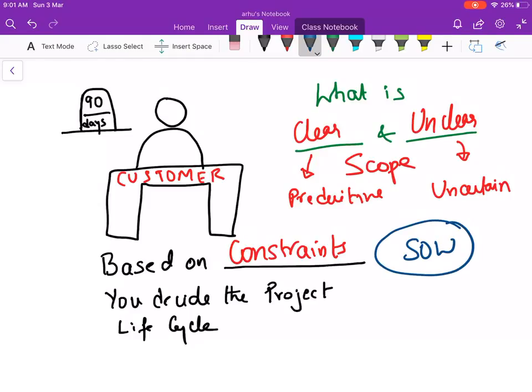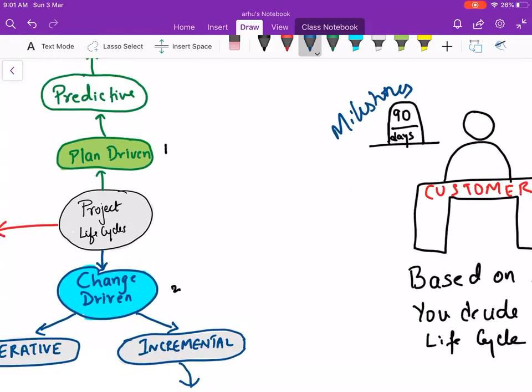And in the SOW you will also call out the milestones for the project. Milestones become the constraints on time. Now when you are doing a project another important constraint to take care of is the cost. How much money is somebody willing to pay for this project.